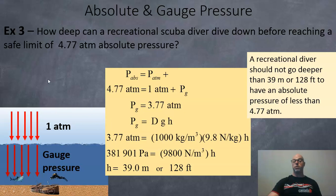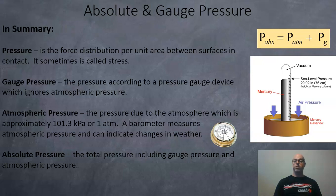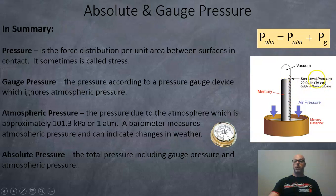In summary: absolute pressure equals atmospheric pressure plus gauge pressure. Pressure is the force distribution per unit area between surfaces in contact (also called stress), or from being submerged. Gauge pressure is the reading from a pressure gauge device, ignoring atmospheric pressure. Atmospheric pressure on Earth is 101.3 kilopascals, or one atmosphere. A barometer measures atmospheric pressure and can indicate changes in weather — the old-fashioned mercury barometer works by air pushing mercury up a tube, with sea-level pressure around 76 centimeters of mercury. An aneroid barometer uses metal sensitive to pressure changes.